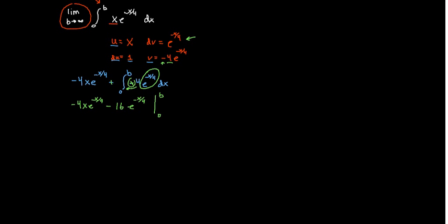So first we're going to plug in b. So negative 4b. Now I see a negative exponent right here. So I'm right now going to move that to the bottom. And that's going to become e to the b over 4.